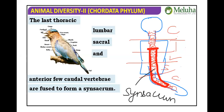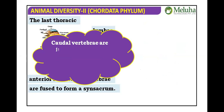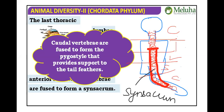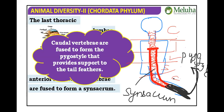The synsacrum is a flight adaptation that prevents bending during flight. The remaining caudal vertebrae fuse to form the pygostyle, which provides support to the tail feathers. So remember both synsacrum and pygostyle in birds.